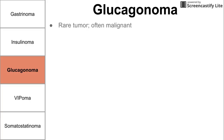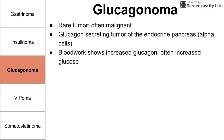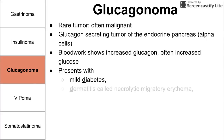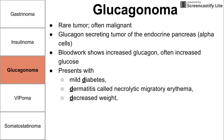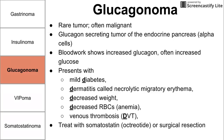Next is glucagonoma, which is a rare tumor and often malignant. By definition it is a glucagon-secreting tumor of the endocrine pancreas, coming from the alpha cells. Blood work shows increased glucagon and often increased glucose. Glucagonoma presents with a bunch of D's: mild diabetes, dermatitis (a rash called necrolytic migratory erythema, commonly seen around the groin area), decreased weight, decreased red blood cells (anemia), and deep vein thrombosis (DVT). You can treat glucagonoma with somatostatin or octreotide, or surgical resection.